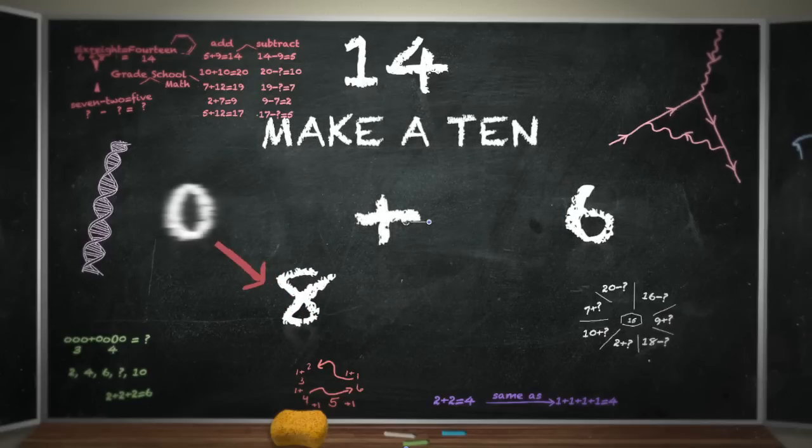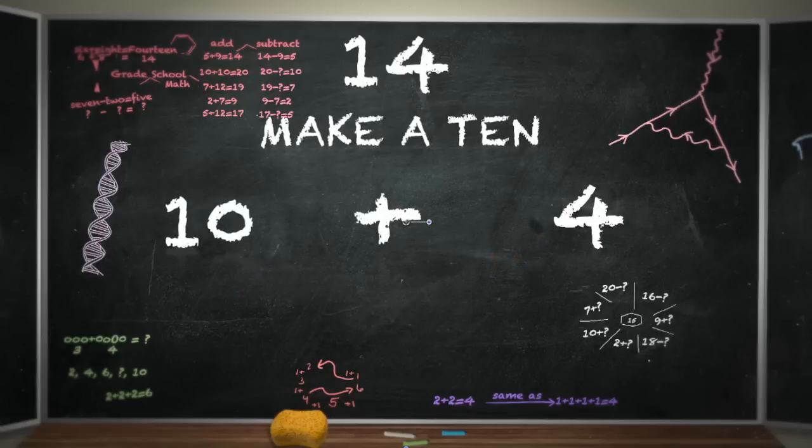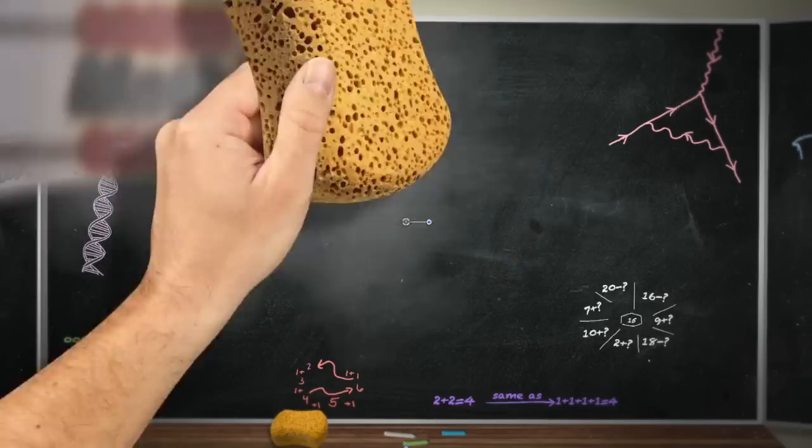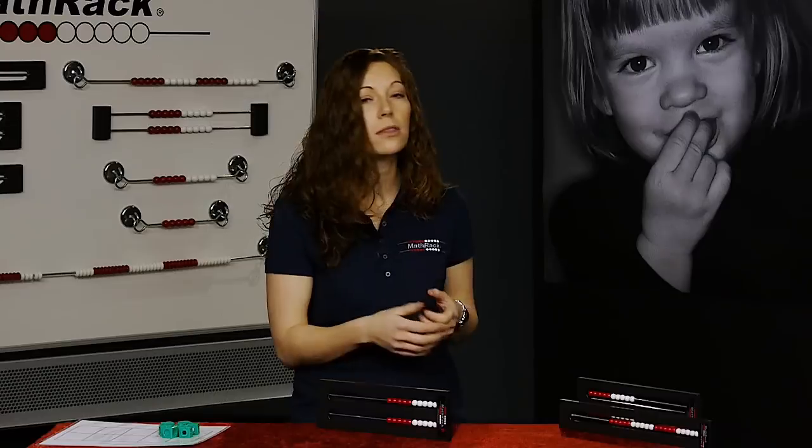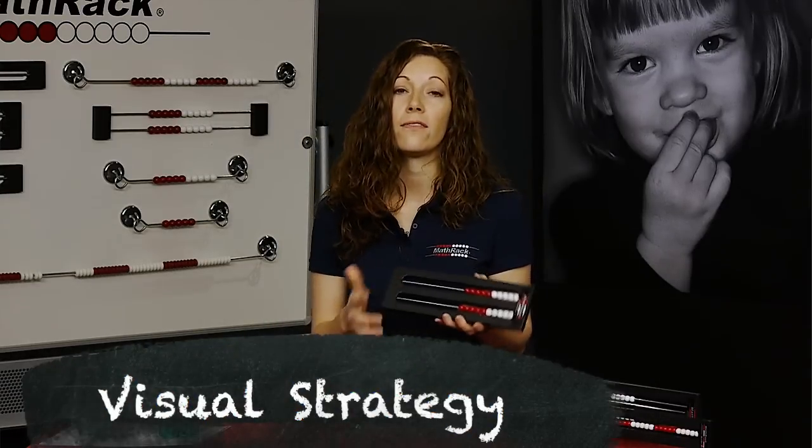So if it's eight plus six, I've got my eight. If I add two more to it, that would make a ten, and then I'm left with four. But these strategies are really abstract to kids. They don't see how the eight plus six transforms into these other variations. It's just like speaking a different language to them. So the power of the math rack is that it gives a visual of those strategies.